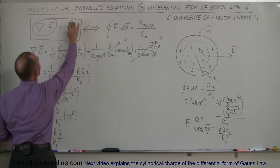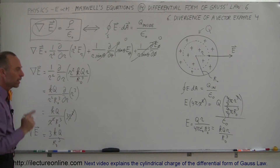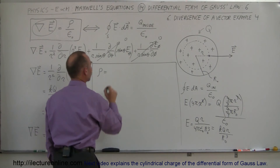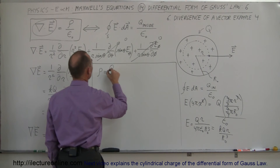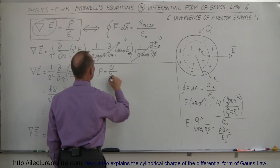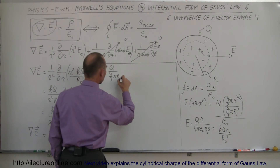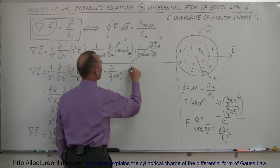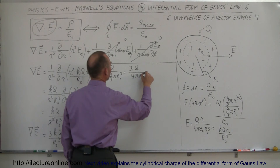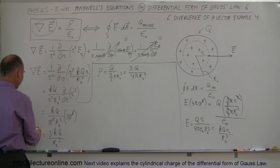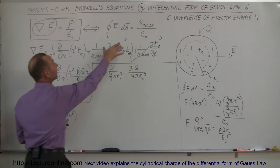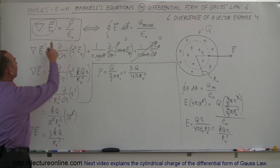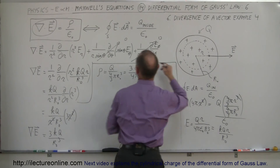According to Gauss's Law in differential form, the divergence of E should equal the charge density divided by epsilon sub nought. The charge density is Q divided by the total volume of the sphere, which is four-thirds pi R sub nought cubed, and that can be rewritten as 3Q divided by 4 pi R sub nought cubed. So the divergence of E, which we found to be 3KQ over R sub nought cubed, should equal this charge density divided by epsilon sub nought.